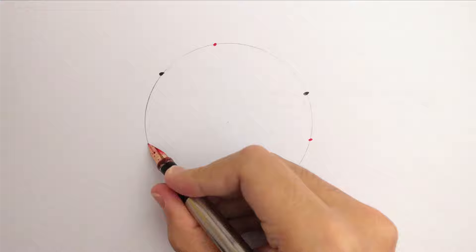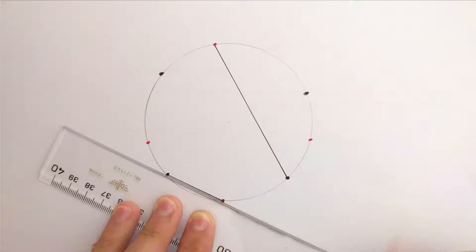Draw alternating red and black points on a circle. Match red points to black points by straight lines, in such a way that the lines do not cross. Keep going, until no point is left alone. How many ways are there to do that?